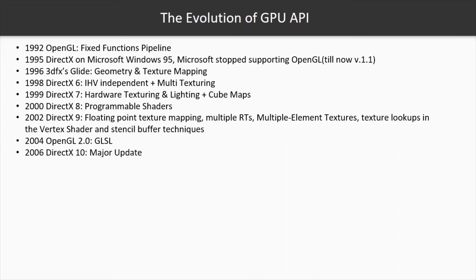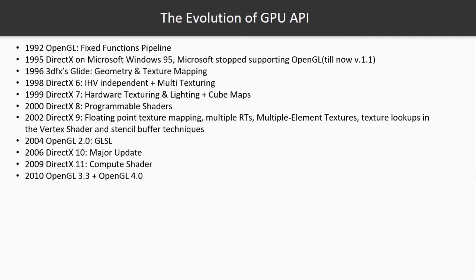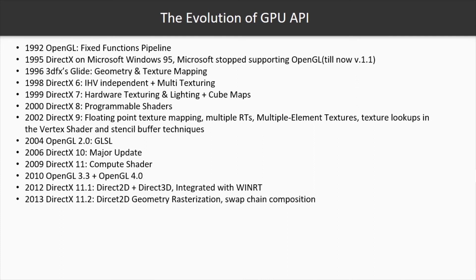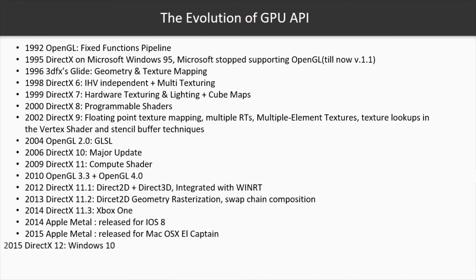In 2006, DirectX 10 was released with a major update: the Geometry Shader stage, which helped developers control and modify vertices between the vertex shader and pixel shader stages. However, DirectX was still the leader during those days. Three years later, DirectX released two breakthroughs — Tessellation and Compute Shaders — both of which solved many problems in real-time rendering. One year later, OpenGL released versions 3.3 and 4.0, designed to target hardware supporting DirectX 10 and 11. However, from 2010 to 2015, there was not really a great change in DirectX or OpenGL.